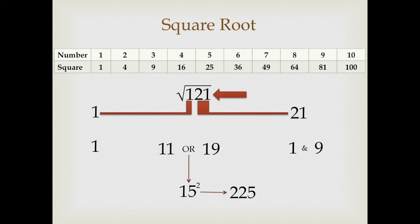So, between 11 and 19, we would take the lesser number because 121 is less than 225. So, 11 is lesser than 19. Hence, 11 is the answer.